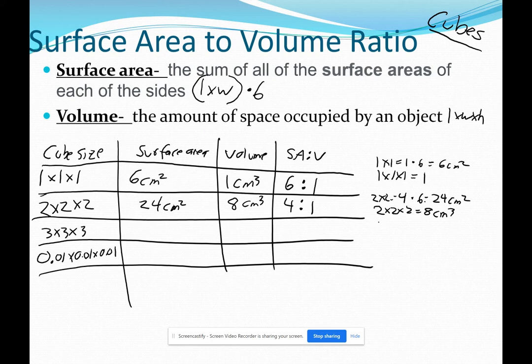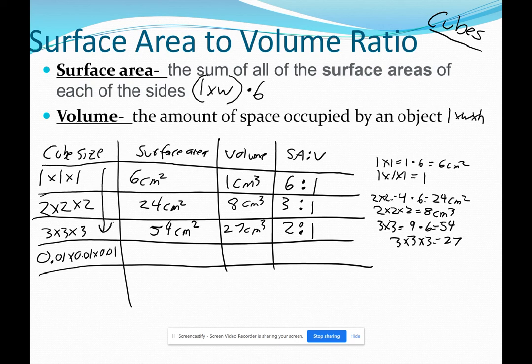Our 3 by 3 by 3. 3 times 3 is 9. Times 6 is 54. So that's 54 cm squared. And then for our volume, it's 3 times 3, which is 9, times another 3 is 27. Now if you reduce that down, that 54 to 27, that is a 2 to 1. So you can see, as our cube gets bigger, our surface area to volume gets smaller. So it's sort of an inverse relationship.